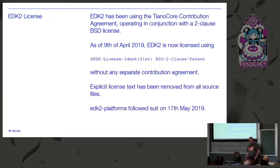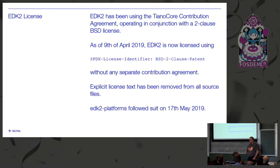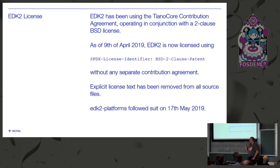Licensing — always important at FOSDEM. EDK2 used to have a really tedious licensing situation with a separate TianoCore contribution agreement working in conjunction with the two-clause BSD. Finally, in April last year, we relicensed all of this to BSD two-clause with the explicit patent grant, which gives exactly the same kind of protection as the TianoCore contribution agreement did, but it wasn't home-rolled. At the same time, we took the opportunity to transition to using SPDX instead of regurgitating whole licenses in every single source file. The open source platform tree EDK2-platforms also follows it, a bit later last year.